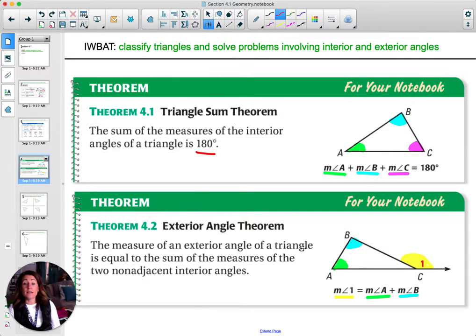For an exterior angle, this angle out here, so angle one. So you see angle one is right next to angle C. Angle BCA in the triangle. So those two are a linear pair. Those two together total 180.